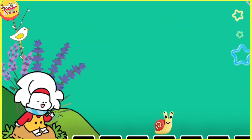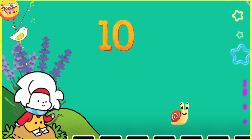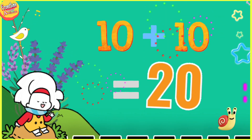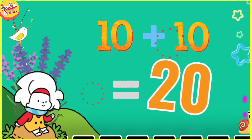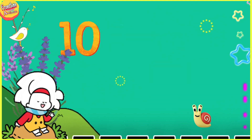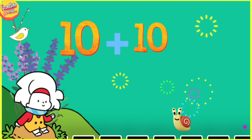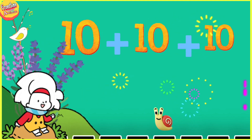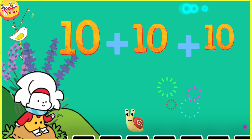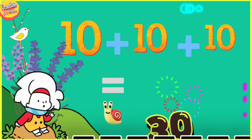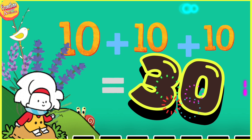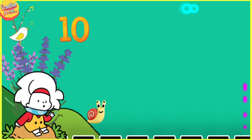10 two times — like 10 plus 10 makes 20. Yes, right! 10 plus 10 makes 20. Now what happens when we add 10 three times? 10 plus 10 plus 10 makes — yes, you are right — 30!